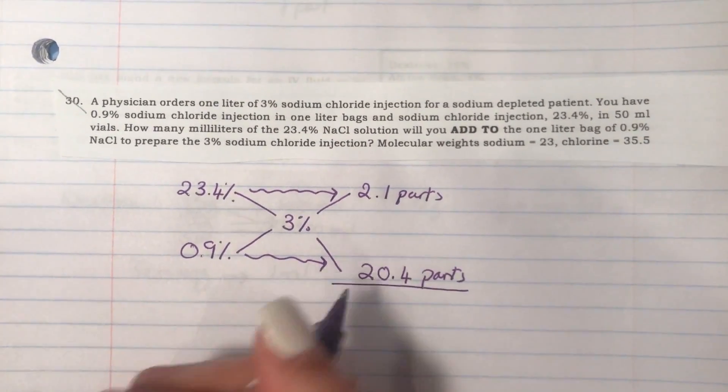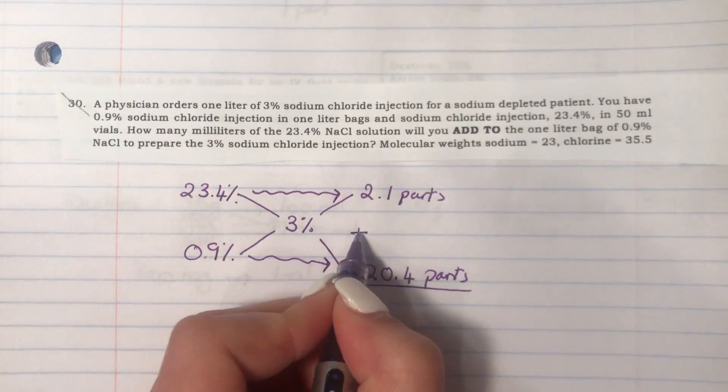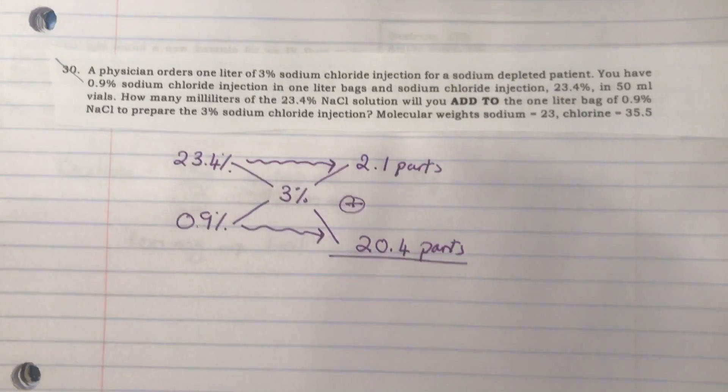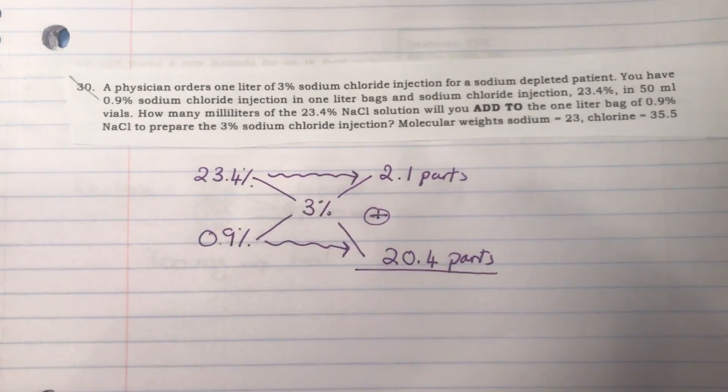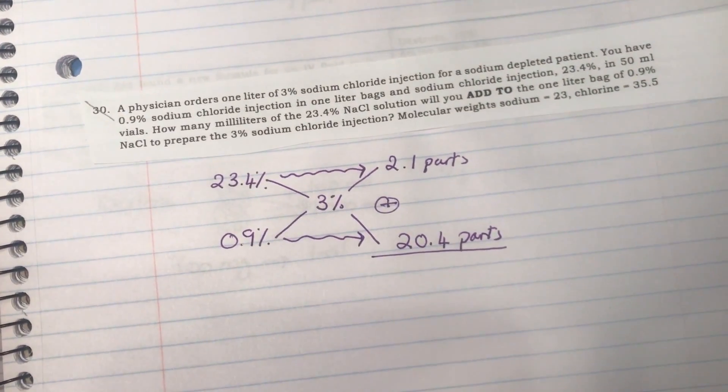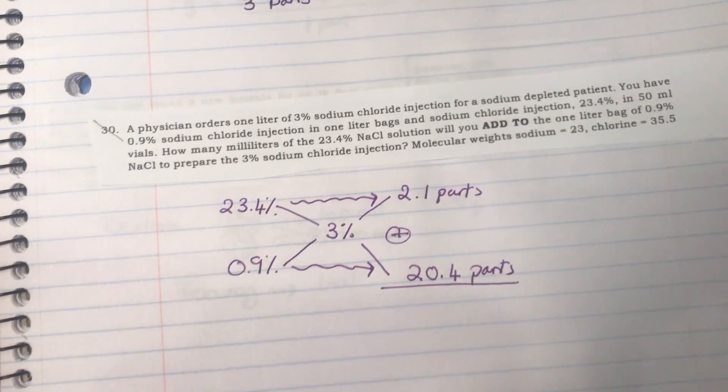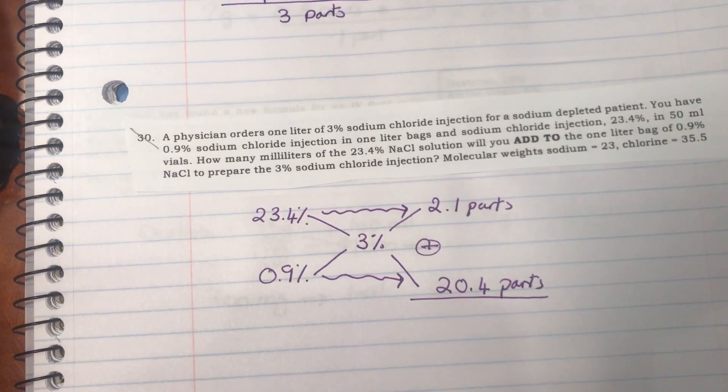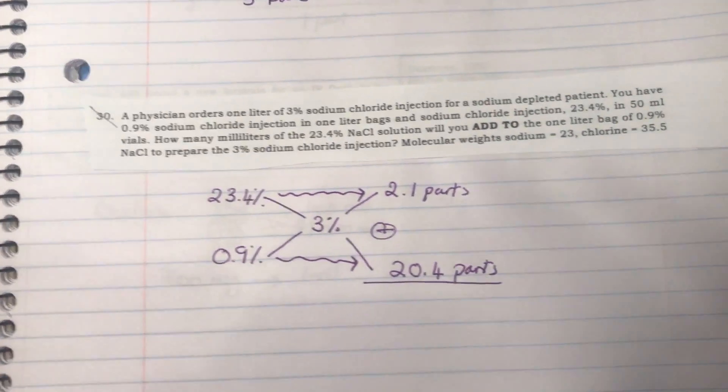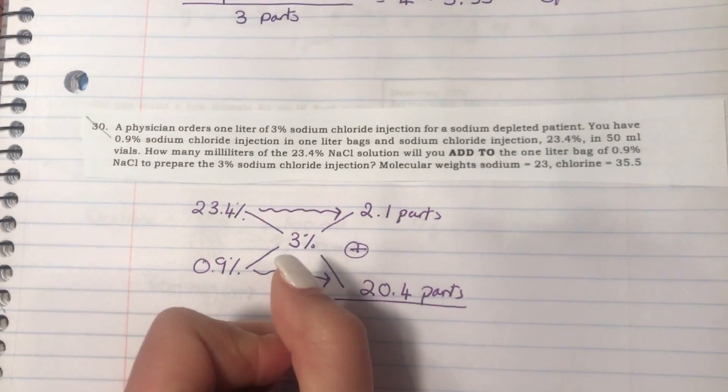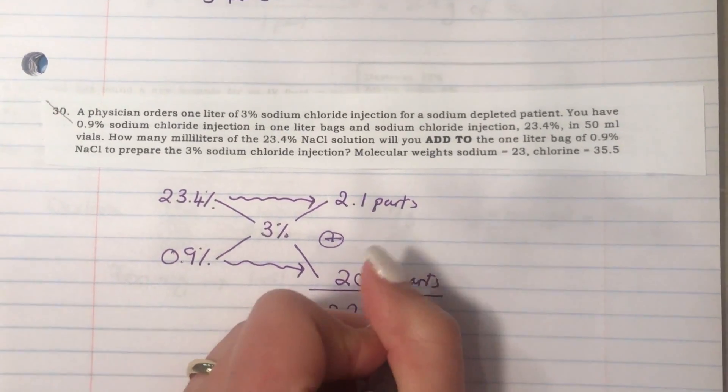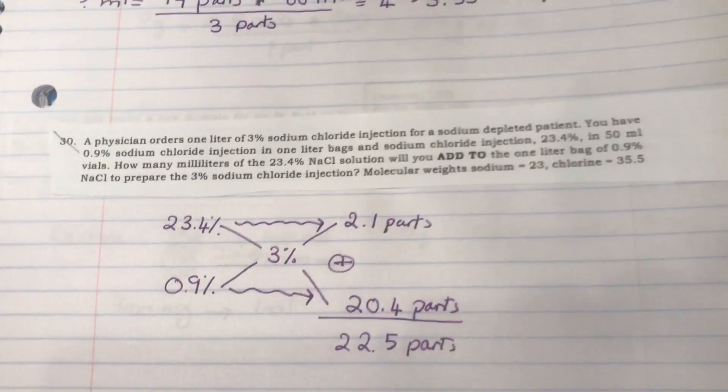Next, you will be adding these parts. So 2.1 plus 20.4 will give you the total amount of parts for the required 3%. That gives you 22.5 parts of the 3%.